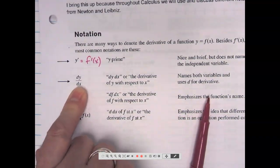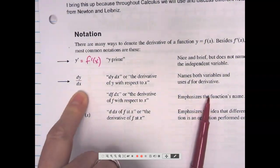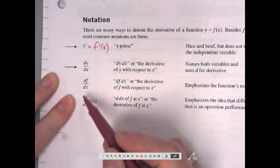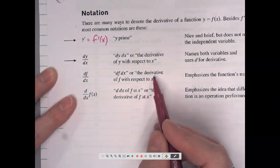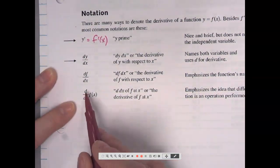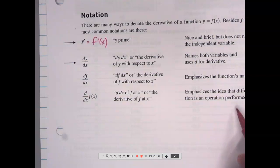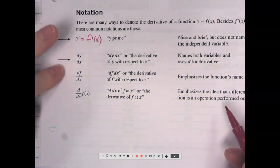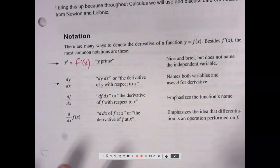It is called the derivative of Y with respect to X. So this is Leibniz notation. And that is used just as often as the Y prime or F prime of X. And the nice thing about this is that it names both variables and actually uses the D for derivative. So you're finding the derivative of an equation named Y with respect to X. So sometimes we'll do a problem like DS, DT, where S represents distance of something and T is time. So it identifies the variables that you're dealing with. These are not used so much, but let's see what they are. This would be red DF DX. It means the derivative of F with respect to X. So it means the same thing, emphasizes the function's name. D DX of F of X is how I would read that. And it just means the derivative of F at X. Emphasizes the idea that differentiation is an operation performed on the function.